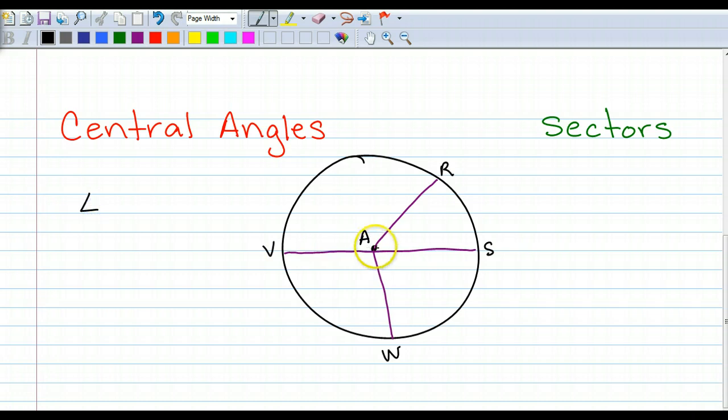We write it, remember, the vertex has to be in the middle, so here's one central angle, R, A, V. Could it be V, A, R? Yes, as long as A is in the middle. Another central angle could be R, A, S, or S, A, R. Is there another central angle? Absolutely. One more, and it could be S, A, W, saw, or was W, A, S. So the central angles are formed, oh, we got one more, sorry, by the radii, so we've actually only done three. There is another central angle, sorry, the other central angle we missed, W, A, V. W, A, V. Okay, so those are the central angles.